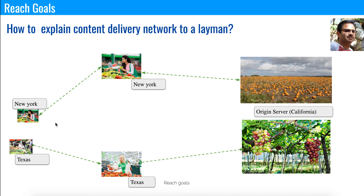This analogy helps illustrate the benefits. It reduces the traveling time from Newark to California — similarly in a real application it reduces latency from the customer to the origin server. For scalability, if everybody goes to the origin server (the farm), it can't serve all customers. Instead, content is distributed across different stores so customers can go there directly. That's how I correlate the real CDN network with a distributed network of farms and vegetable stores.